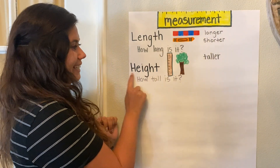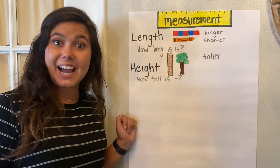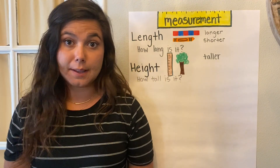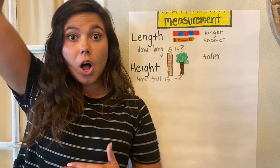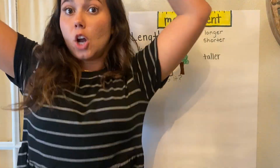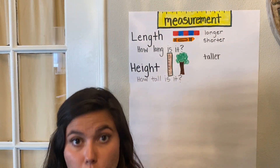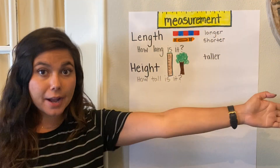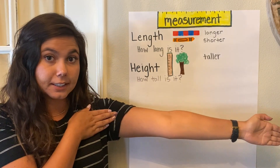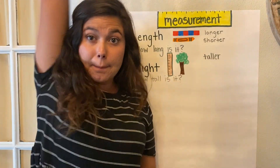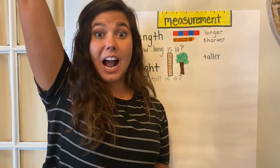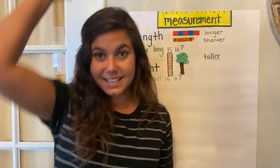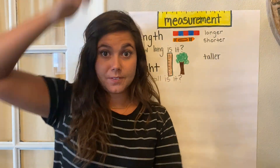Here's another one - height. Can you say height? Height is talking about how tall something is. Is it taller or shorter? So put your arm out and say length - length. Put your other arm up and say height - height. How tall it is. Length is how long, height is how tall. Got it?